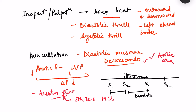The diastolic decrescendo murmur is best heard with the patient sitting up, leaning forward, with breath held in forced expiration. In expiration, pulmonary vessels collapse and venous return to the left side of the heart increases, enhancing LV filling and consequently increasing backward flow in diastole. Any manoeuvre that increases peripheral vascular resistance — such as hand grip exercises — also increases backward flow and intensifies this murmur.